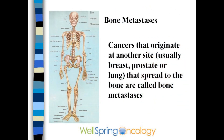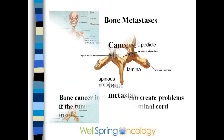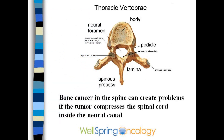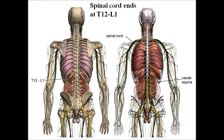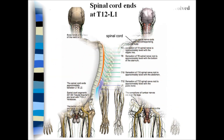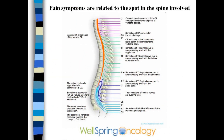Bone metastases are cancers that originate in another site and spread secondarily to the bone. The source of the cancer is called the primary. The anatomy in the spine can be quite complicated, and there are more detailed images of the spine, spinal cord, and nerves on the website that help explain some of the symptoms.